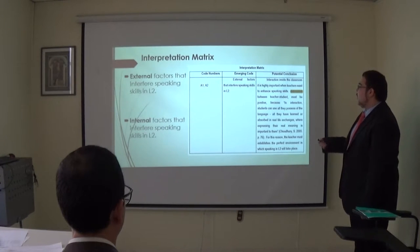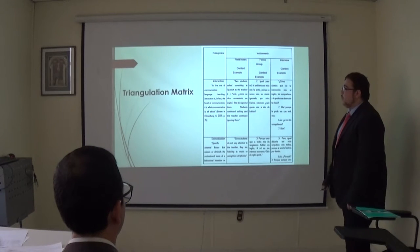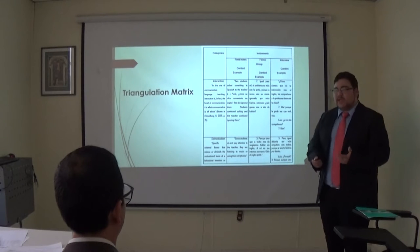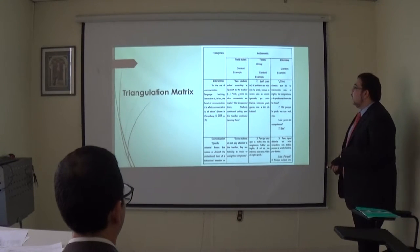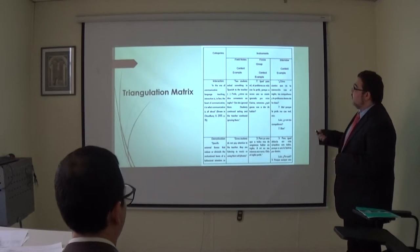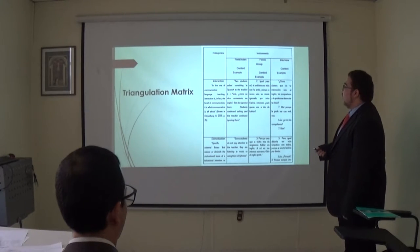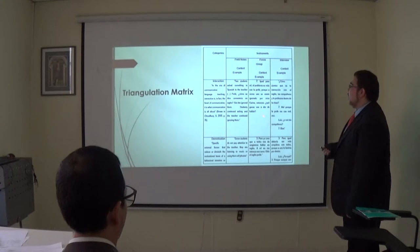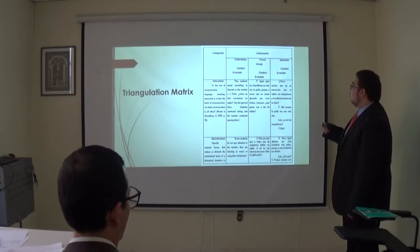This is the interpretation matrix with the potential conclusions. And finally, the triangulation matrix. The idea of triangulating information is to cross-check information from different sources into the same category. The rows show the field notes, focus group, and interview. The columns show the different categories. These instruments reflect the same categories — for example, interaction appears in field notes, focus group, and interview.